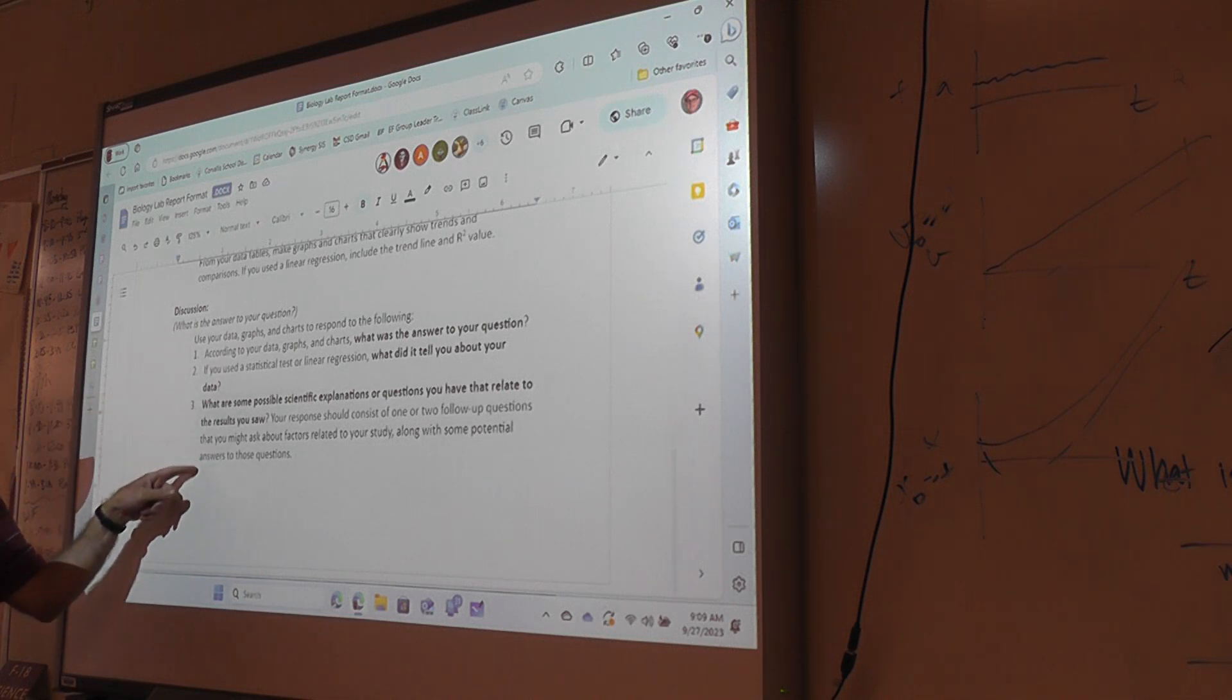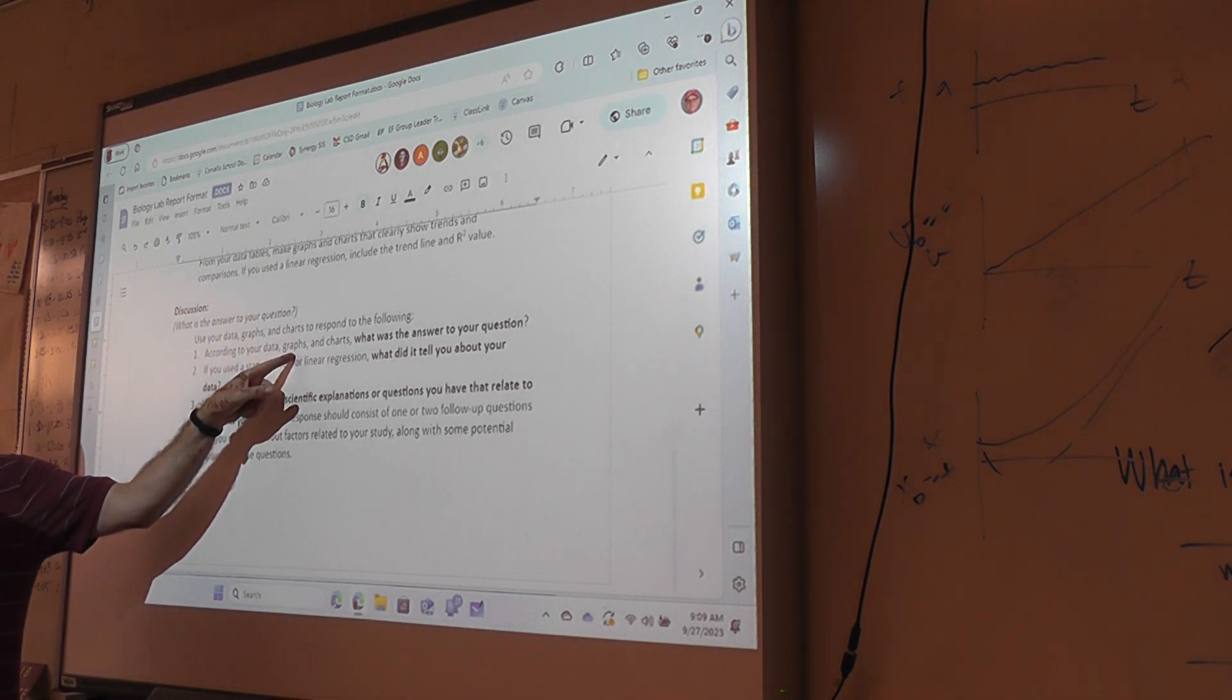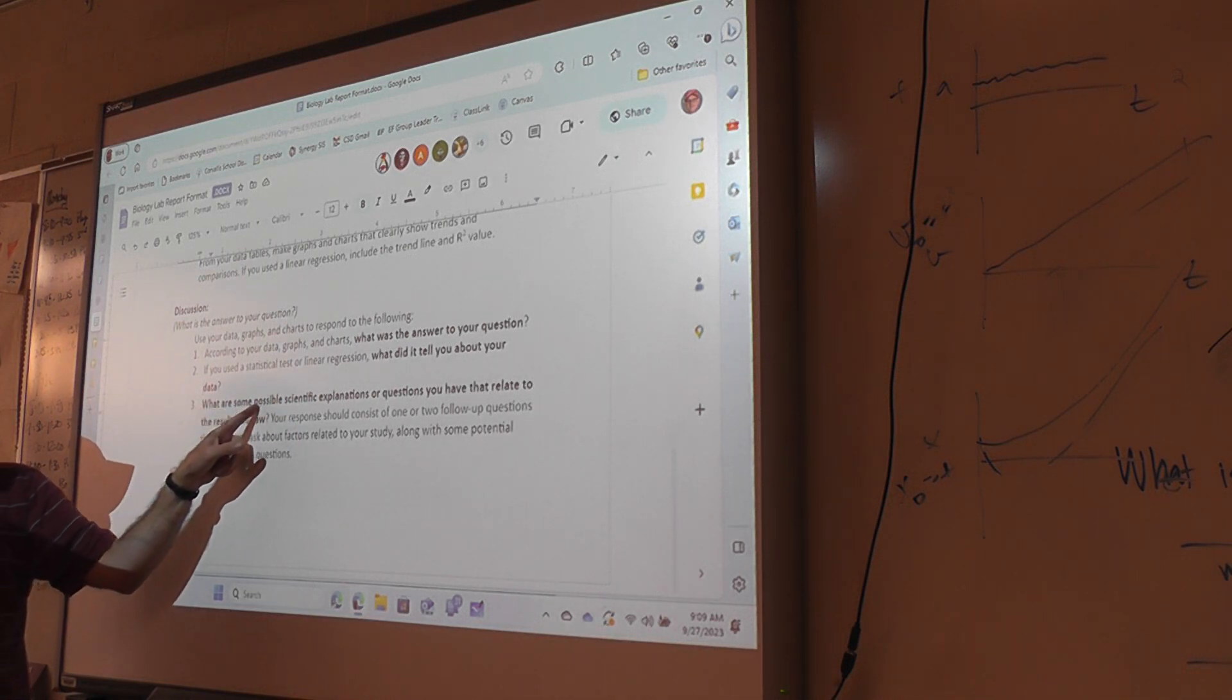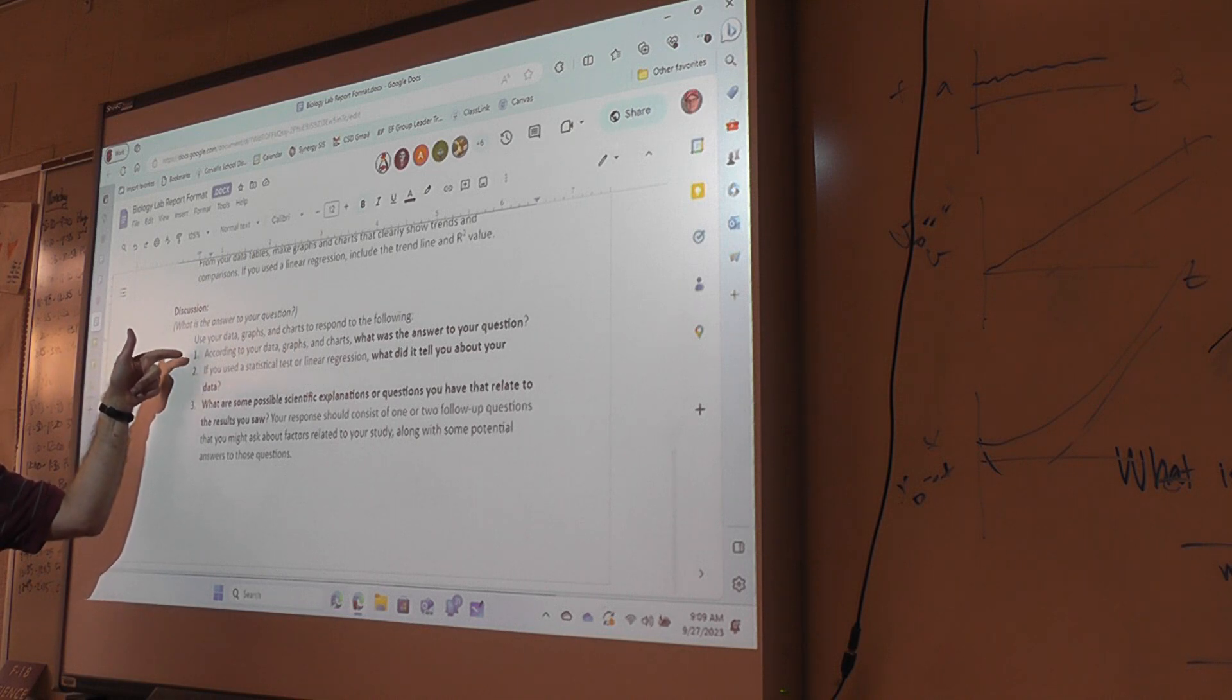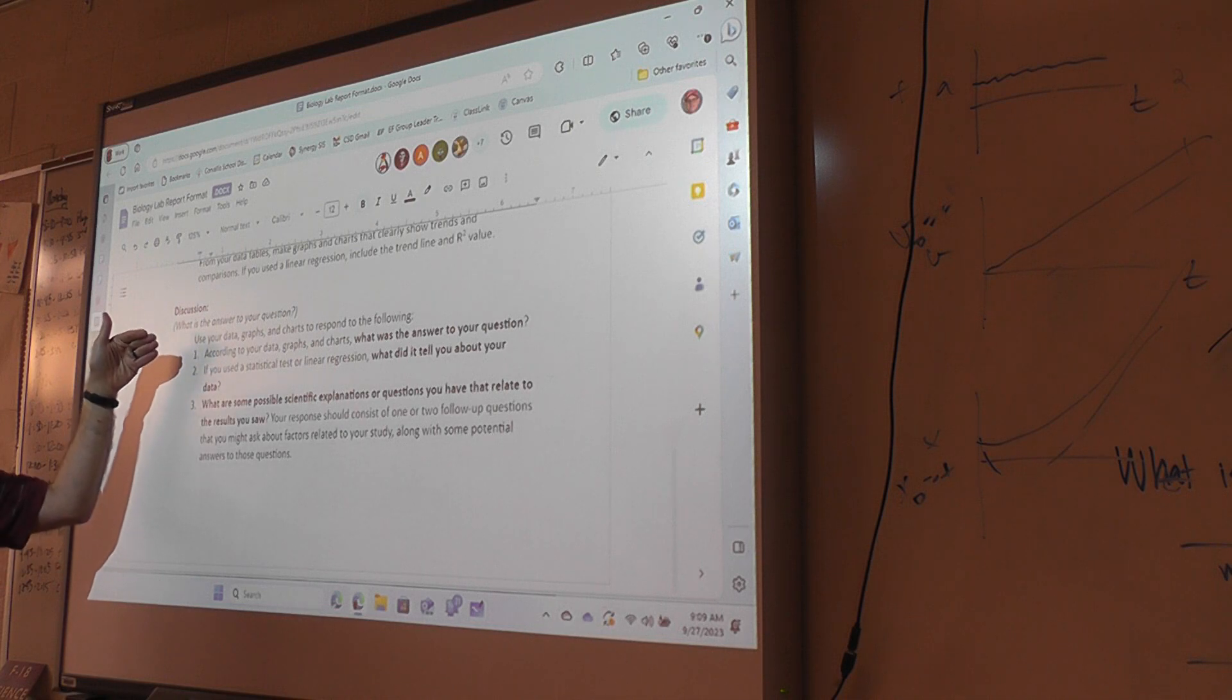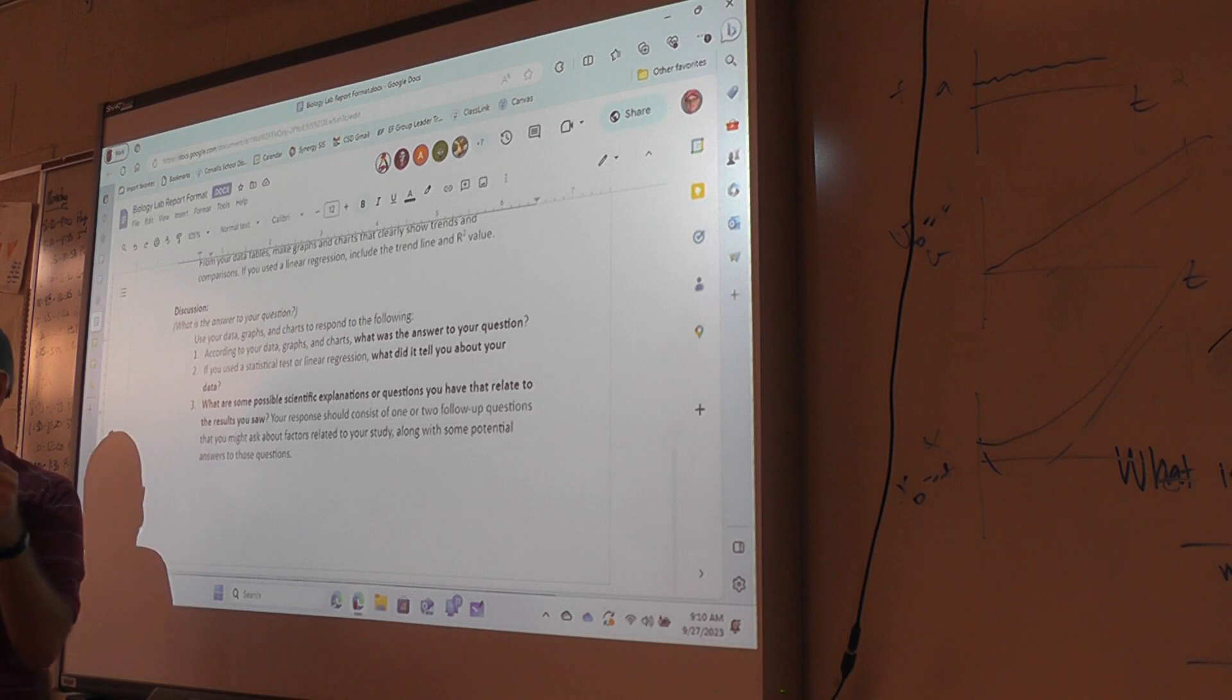And the only thing that I want to mention about the discussion that's important is I have these numbers. You shouldn't have those numbers. You're not going to have one, my answer was this. Two, my statistical test said this. Three, some explanations I have are blah blah blah. You're going to write it like in paragraphs. It's like a story that you're writing. So these one, two, and three should not show up in your discussion. This is just to help you kind of keep organized about these three things should be in there, but they don't need to be numbered.